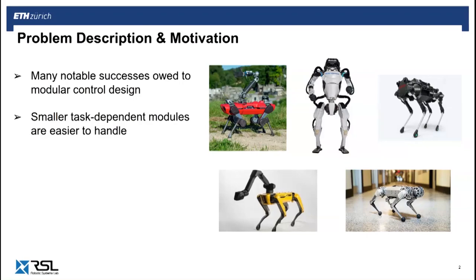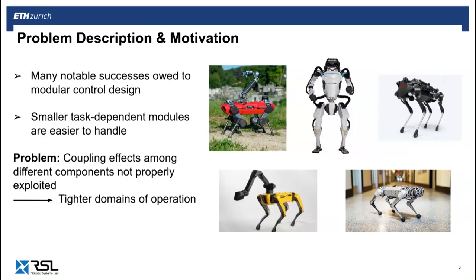When it comes to controlling multi-limbed robotic systems such as humanoids or quadrupeds, many of the notable achievements in the field can be owed to modular control design. This strategy decomposes the entire control problem into smaller, more manageable submodules. For example, one unit could be responsible for generating center of mass motions, another for contact locations and limb trajectories, and a third for manipulation planning. Even though the task-dependent modules are simpler to handle, they are typically decoupled, leading to tighter domains of operation, since many of the coupling effects between the different components are not being properly exploited.